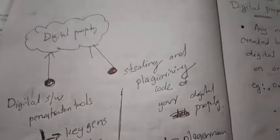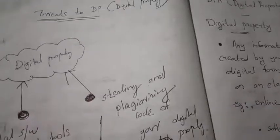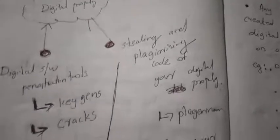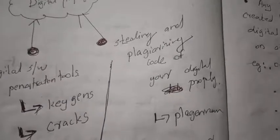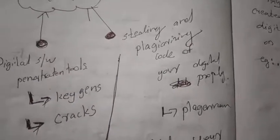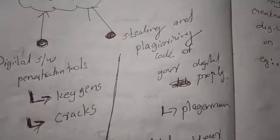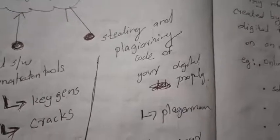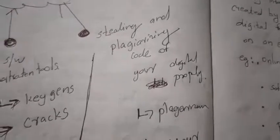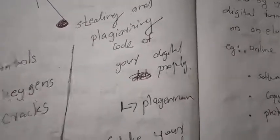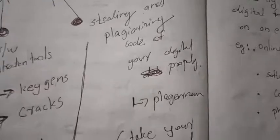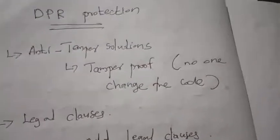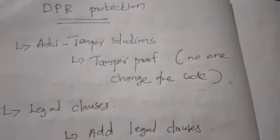To summarize the threats to digital property: first, digital software penetration tools — key generators and crackers; second, stealing and plagiarism of your digital property code. Now we will study how to protect our digital property.